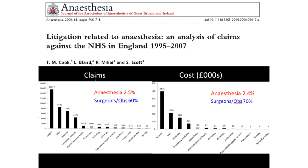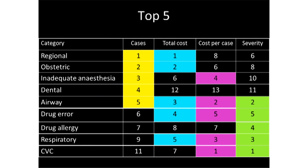When things go wrong, people sometimes sue. In an analysis of UK litigation, whichever way you cut it up, surgeons get sued and they cost about 20 times more from litigation than anaesthetists. They may argue that's because they do more work, but it doesn't quite work out like that. When patients do sue anaesthetists — and we are a low-risk specialty for litigation — it's about regional anaesthetics, particularly obstetrics, inadequate anaesthesia both regional and general, and airway problems.